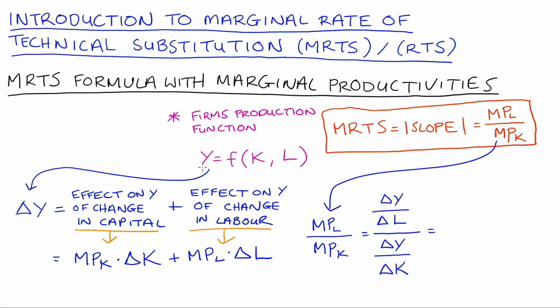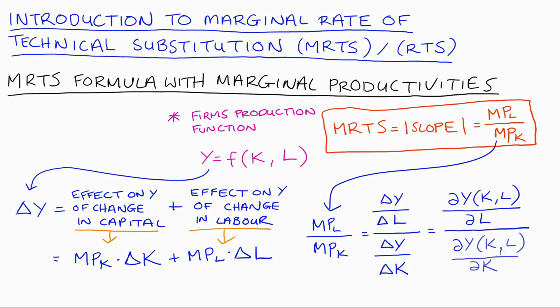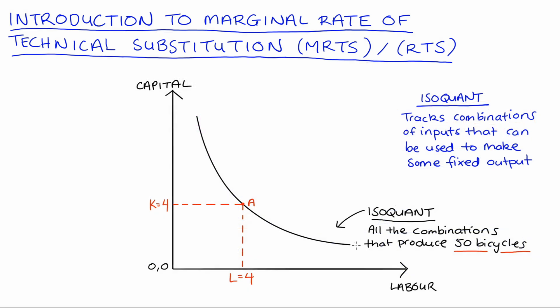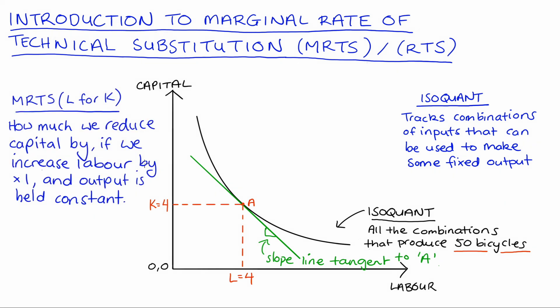If your coursework is at that level, we can introduce derivatives: MPL equals the partial derivative of the production function with respect to labour, and MPK equals the partial derivative with respect to capital. Using derivatives means making all our discrete changes infinitesimally small, which allows us to calculate the slope of an isoquant at any particular point — essentially finding the slope of the tangent line at that point, which we take as our MRTS.